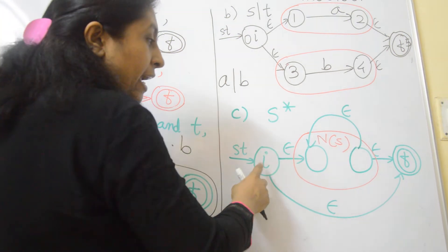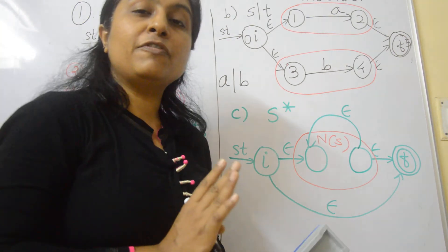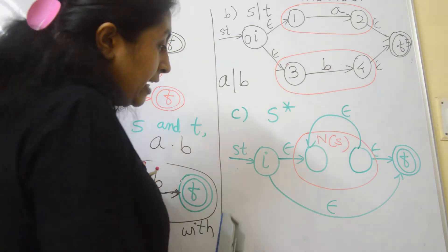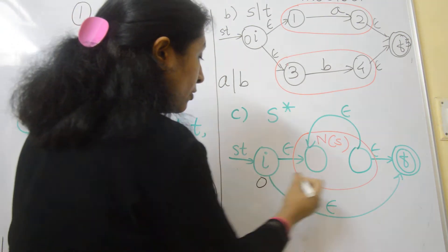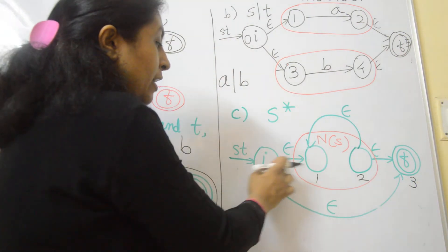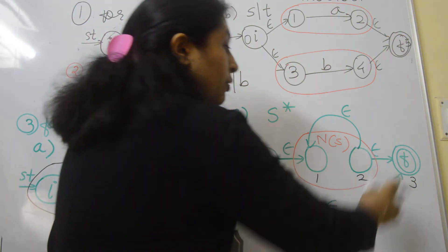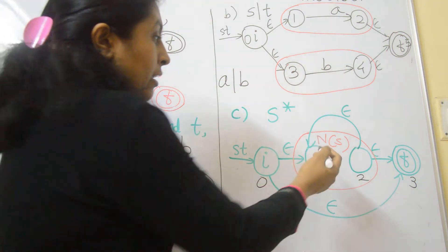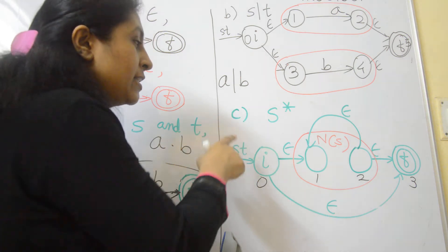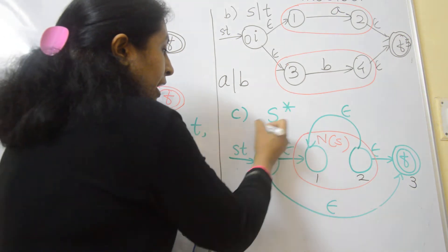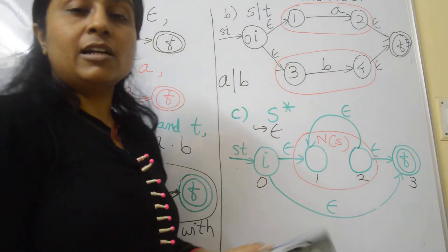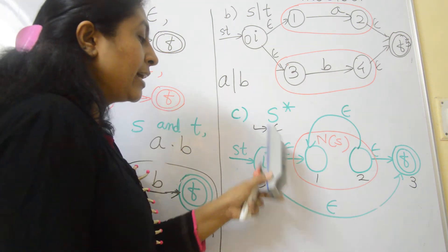For Kleene closure, we need a minimum of four states: an initial state, a final state, and two intermediate states. Numbering them 0, 1, 2, and 3: from state 0 to state 1 put a null transition, from state 2 to state 3 put another null transition. One null transition goes from state 2 back to state 1 for repetition of the symbol in S. If S* produces a null string, there is a null transition directly from state 0 to state 3 to accept null strings.